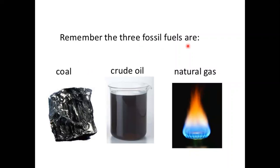Now remember the three fossil fuels we already discussed. First is coal — it looks like a stone. In many areas coal is used for cooking, especially by mountaineers, and it is also used to generate electricity. Second is crude oil — a raw or fresh oil that comes from the ground before being processed into different oil products.